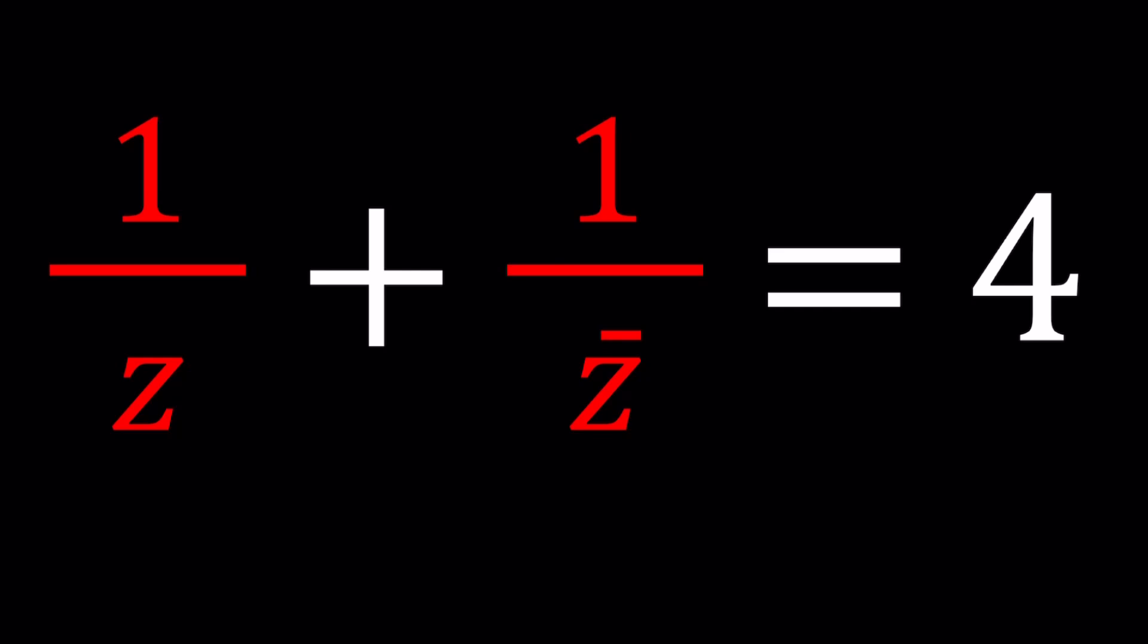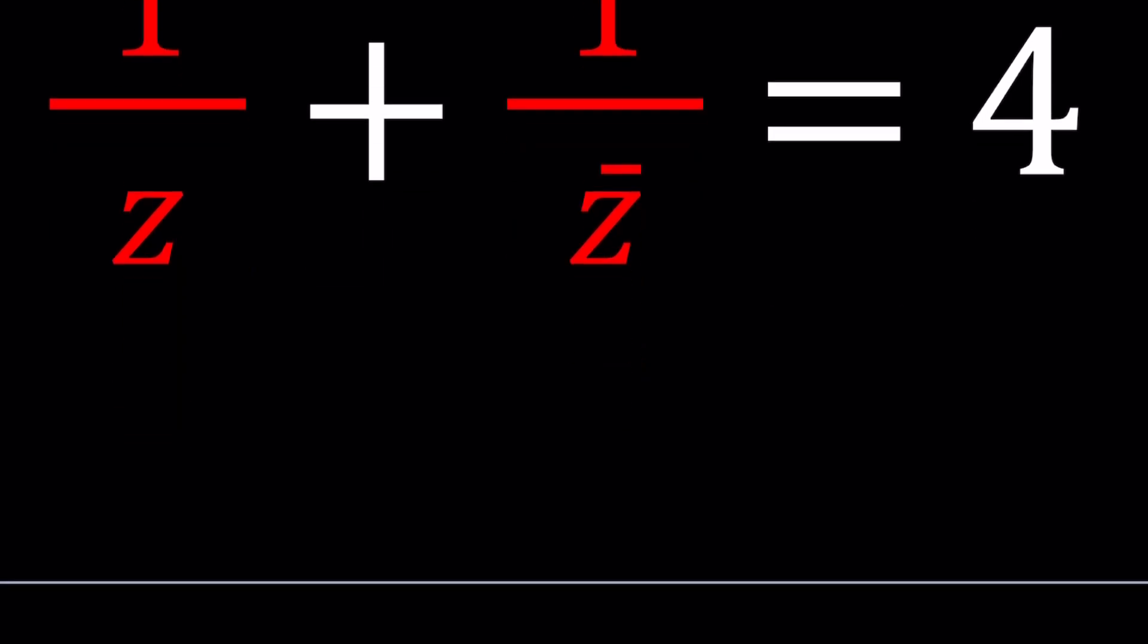So even though this channel is called A plus B I, we're going to have to sacrifice on that name a little bit and set z equal to x plus y I because this is kind of like a locus problem and if you don't know what that means, don't worry about it, you'll find out. So z is equal to x plus y I or you could use A plus B I but always make the conversion to x and y at the end.